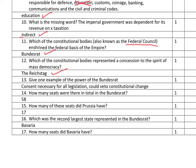Question thirteen: one example of the power of the Bundesrat. There were two possible things. I was reasonably lenient and flexible in how I marked this one, but precisely: its consent was necessary for all legislation, and secondly, it could veto constitutional change. Number fourteen: how many seats were there in total in the Bundesrat? There were fifty-eight. And of those fifty-eight — question fifteen — Prussia had seventeen seats.